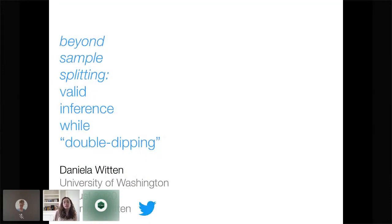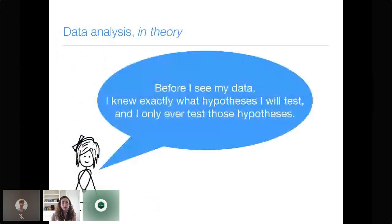The idea here is that often in statistics, there's a gap between what we want to do when we analyze our data and what we know we should be doing. I'm going to refer to that gap today as double dipping. In theory, we know what we're supposed to be doing — before I see my data, I know exactly what hypothesis I want to test, and I'm only ever going to test that hypothesis. If we behave in this very virtuous way, then the statistical properties we expect for our methods will hold.